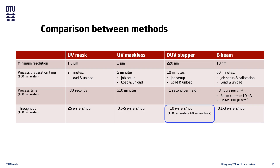If we look at the deep UV stepper, we notice that the throughput for 100mm wafers is much lower than the throughput for 150mm wafers. The machine was originally built for processing 150mm wafers, which it does much faster. These are all important notes to remember when you have to design your own process.